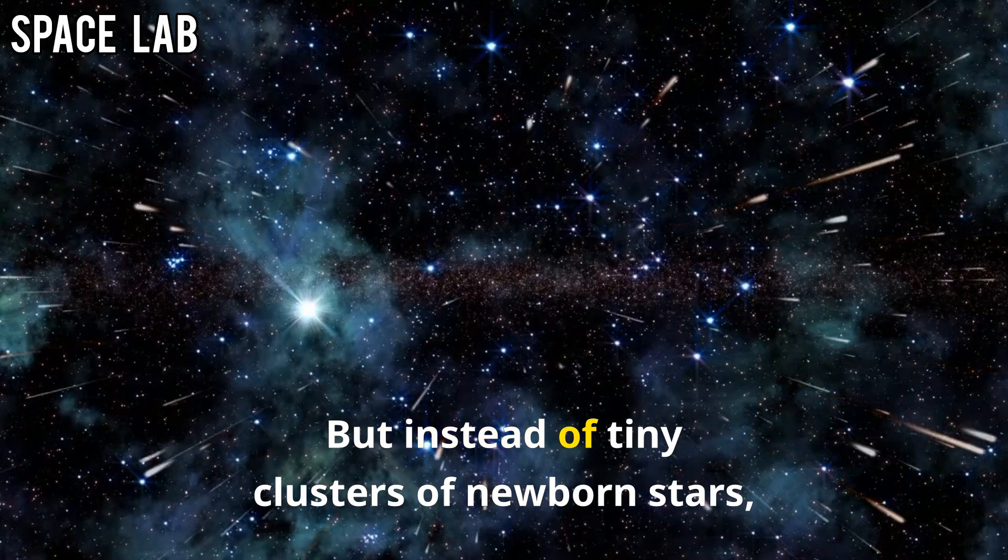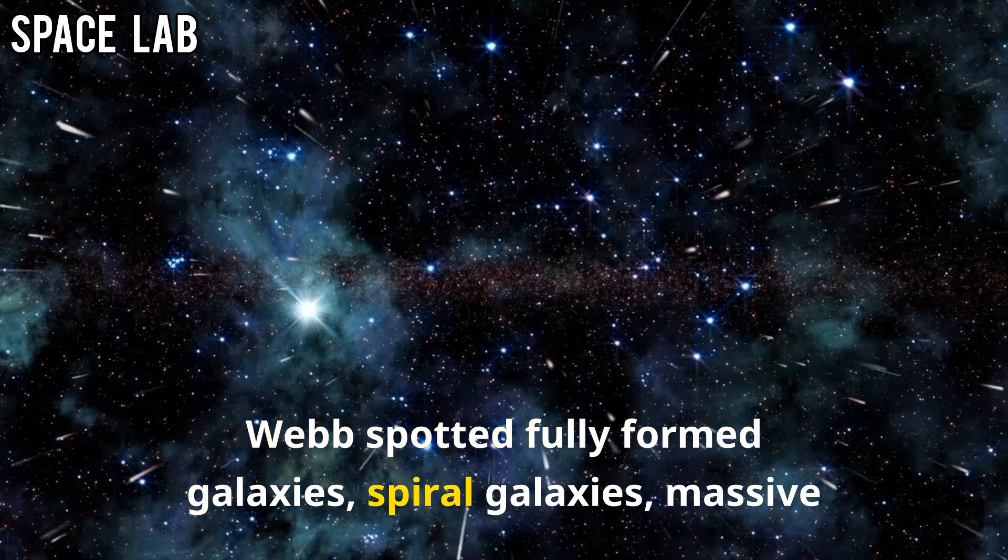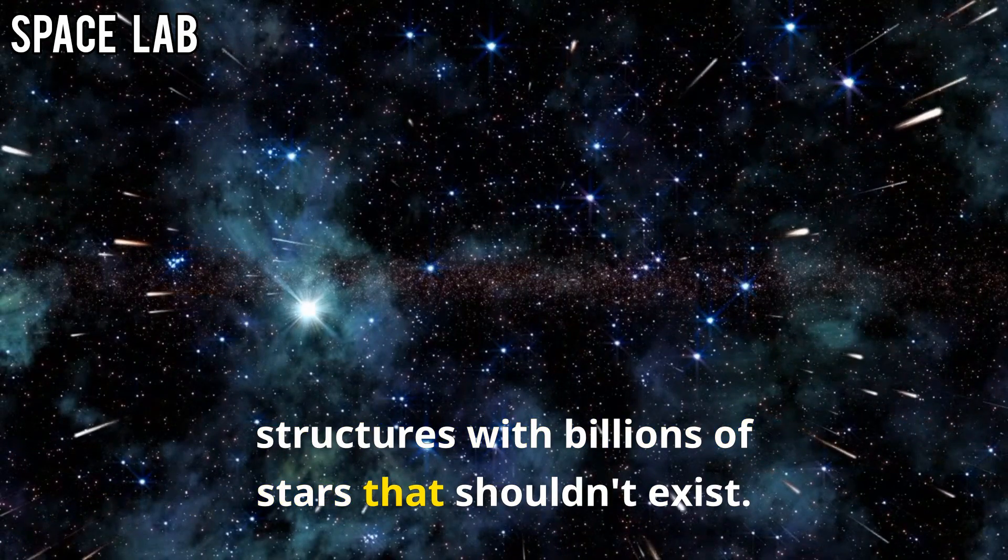But instead of tiny clusters of newborn stars, Webb spotted fully formed galaxies, spiral galaxies, massive structures with billions of stars that shouldn't exist.